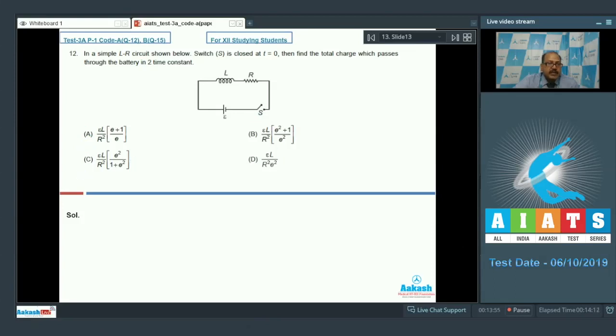The four options are given. Let us find the total charge which passes. First of all, the time constant for this circuit is tau equal to L by R. We know that when the current starts flowing at t equal to 0, the expression of current will be I is equal to E by R into 1 minus E to the power minus T by tau. This is the expression of current and this is also dQ by dt.